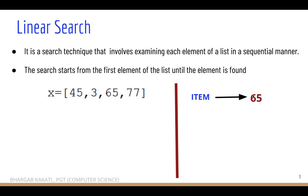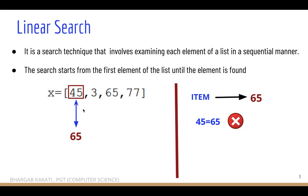Let's say the item to be searched is 65. Among these items we need to search whether 65 is present in list x or not. First, the first element will be taken up. The first element is 45, and 45 will be compared with the item to be searched, which is 65. Is 45 equal to 65? No, so it will move to the next element.